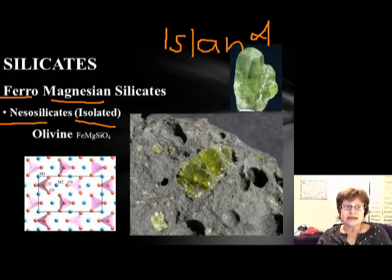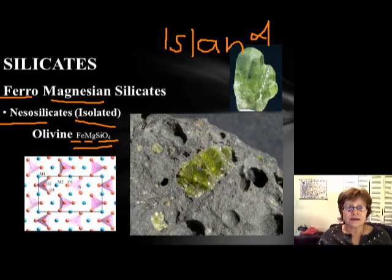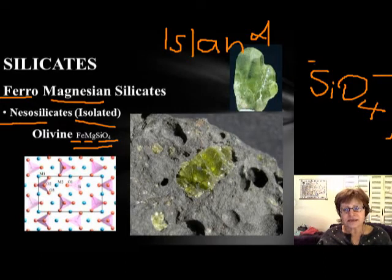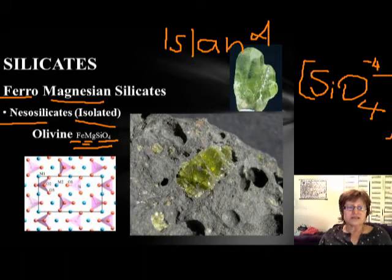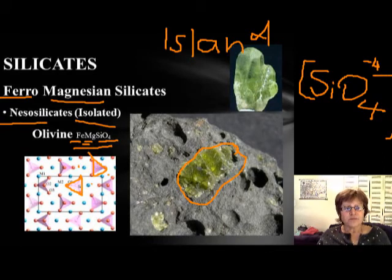The first mineral is olivine — a ferro-magnesium silicate with isolated silica-oxygen tetrahedra. The formula contains SiO4, which originally carries four negative charges. The magnesium and iron cations fulfill those four negative charges. In space, the tetrahedra are surrounded by magnesium and iron atoms. Olivine is usually green and very pretty.